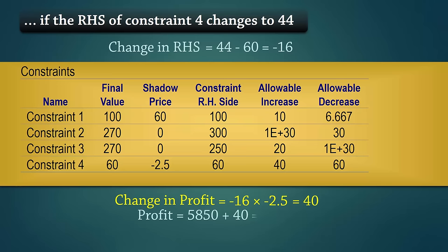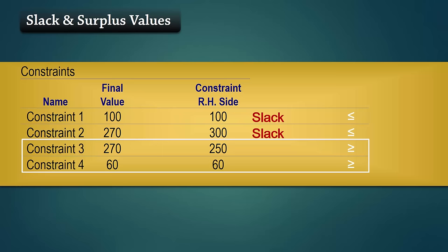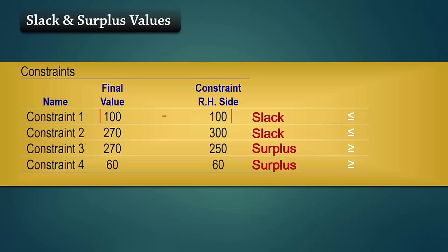For slack and surplus values, we simply take the difference between the final value, that is the left side of the constraint, and the right hand side. Constraints 1 and 2 are less or equal constraints, so they will be associated with slack variables. While 3 and 4 are greater or equal constraints, and will be associated with surplus variables. So the slack value for Constraint 1 is 0, and for Constraint 2 it is 30. The surplus for Constraint 3 is 20, and for Constraint 4 it is 0.